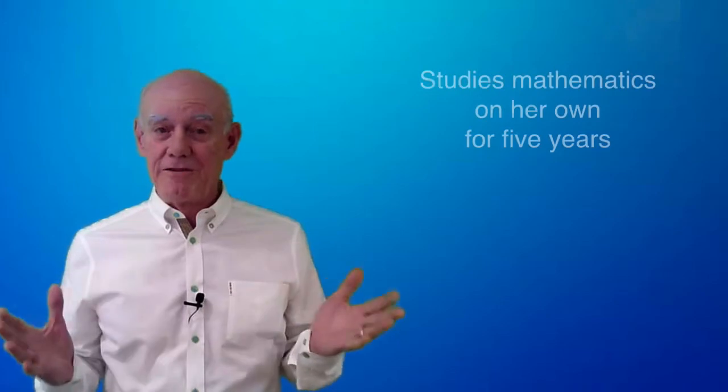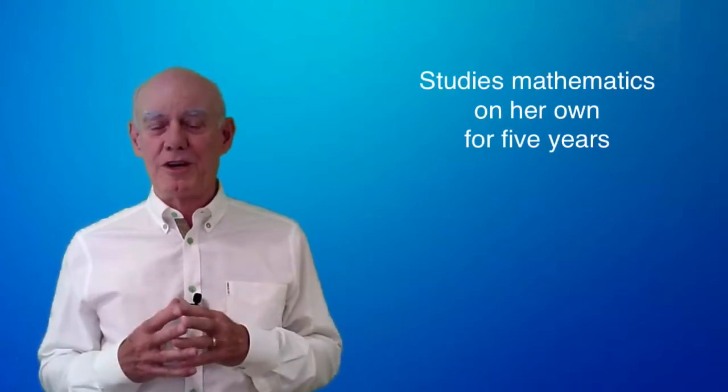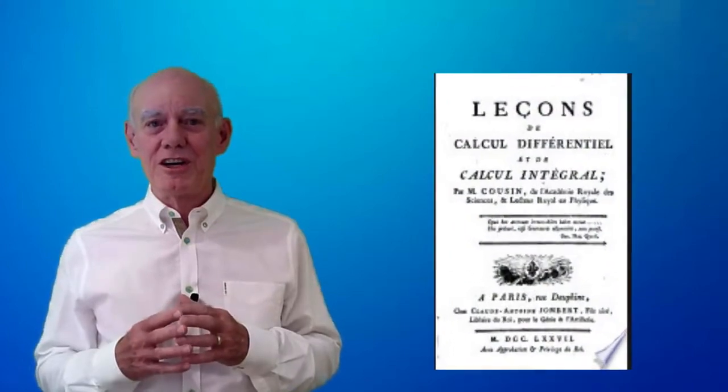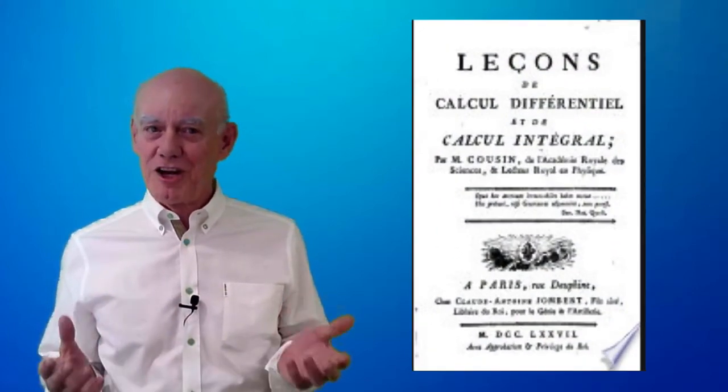For the next five years, Sophie continued to study mathematics completely on her own. As one historian put it, Sophie spent the years of the reign of terror studying differential calculus without the aid of a tutor. When she was 18, a new university opened in Paris to train mathematicians and scientists.